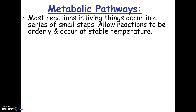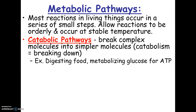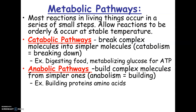A metabolic pathway is a series of reactions that allows something to happen in small steps. Any pathway that breaks things down is called a catabolic pathway — like digesting your food or breaking glucose down. Breaking glucose down takes about 20 steps to go through the entire cell respiration process. Anabolic pathways build things. So anabolism is building and catabolism is breaking down. Both of these types of pathways involve enzymes — enzymes are involved in the steps to build things and break things down.